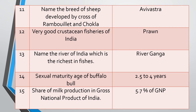Question eleven: Name the breed of sheep developed by crossing Rambouillet and Chokhla. The name of the breed is Avivastra. It was developed at the Sheep Wool Centre at Avikanagar in Rajasthan, and so it was named Avivastra.